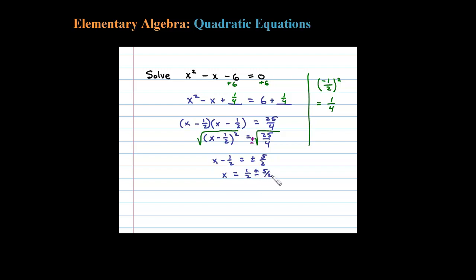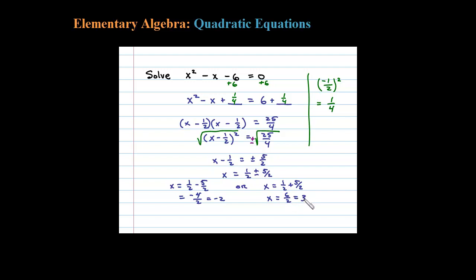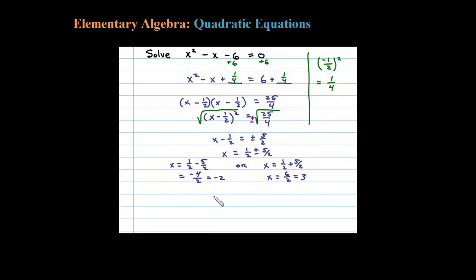Adding 1/2 to both sides gives x equals 1/2 plus or minus 5/2. So x equals 1/2 minus 5/2, which is negative 4/2 or negative 2, or x equals 1/2 plus 5/2, which is 6/2 or 3. Our two solutions are negative 2 and 3.